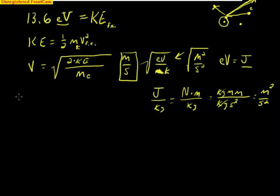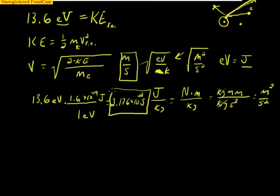What does that work out to be? We have 13.6 eV, and we know that for every electron volt it's equivalent to 1.6 times 10 to the negative 19th joules. This equals 2.176 times 10 to the negative 18th joules.